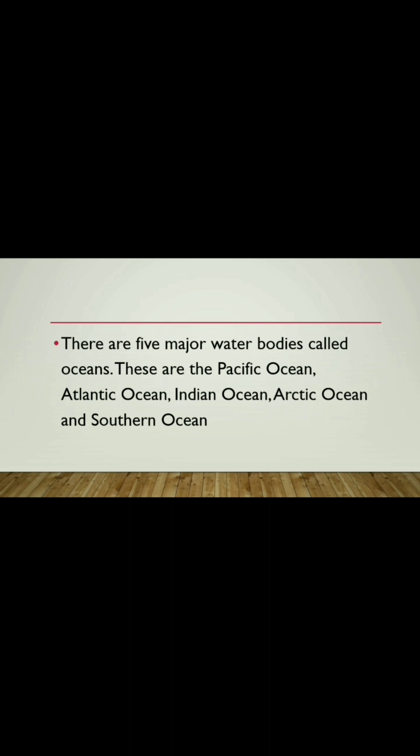Besides continents, there are five major water bodies called oceans: the Pacific Ocean, Atlantic Ocean, Indian Ocean, Arctic Ocean, and Southern Ocean. The Pacific Ocean is basically circular in shape. The Atlantic Ocean is S-shaped, like the alphabet S. The Indian Ocean is triangular in shape. The Arctic Ocean lies in the north and remains frozen most of the time. The Southern Ocean lies around Antarctica.